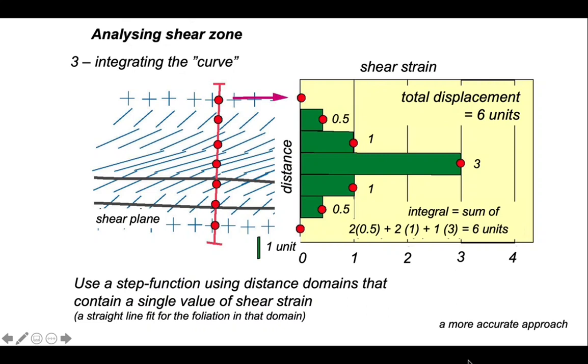But certainly, it gives an impression across the shear zone itself. In here, we can see that the highest shear strain, a value of 3, is in the core of the shear zone. And that the shear strain drops away to the margins of the shear zone. So we're learning something about localization.